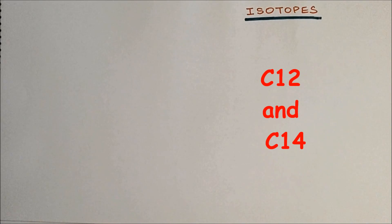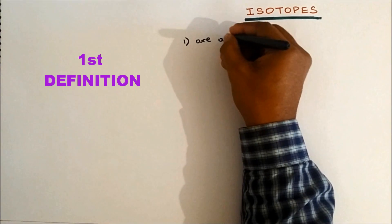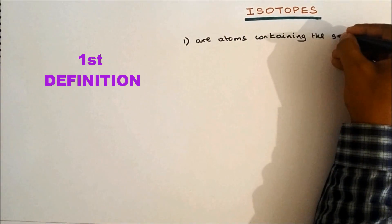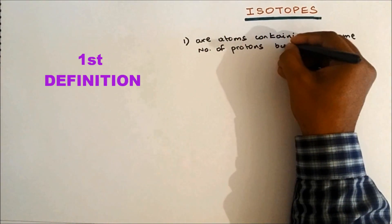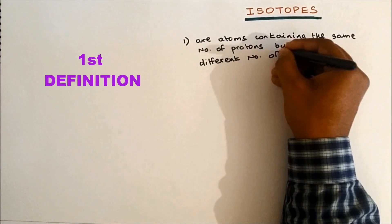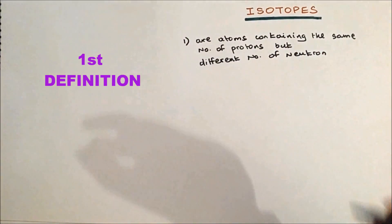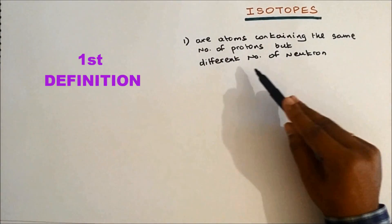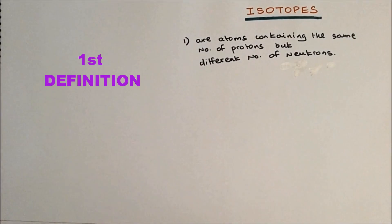Let's start with the basic one. Number one: isotopes are atoms containing the same number of protons but different number of neutrons. Please remember you don't have to include the number of electrons at all, just mention it has the same number of protons but different number of neutrons.